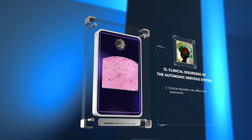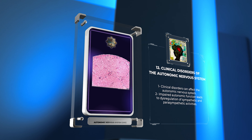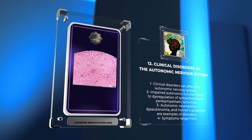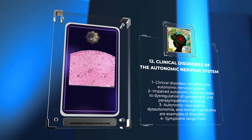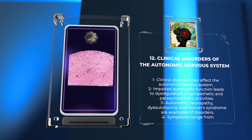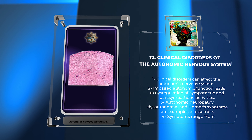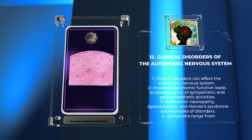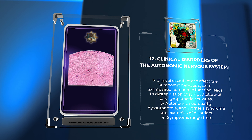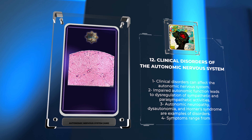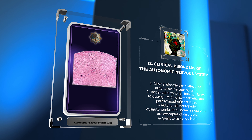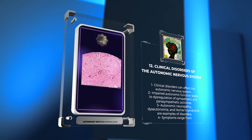Numerous clinical disorders can affect the autonomic nervous system, leading to dysregulation of sympathetic and parasympathetic activities. Diseases like autonomic neuropathy, dysautonomia, and Horner syndrome result in impaired autonomic function, disrupting vital bodily processes. These conditions manifest with symptoms ranging from cardiovascular abnormalities to gastrointestinal dysfunction and abnormal sweating.